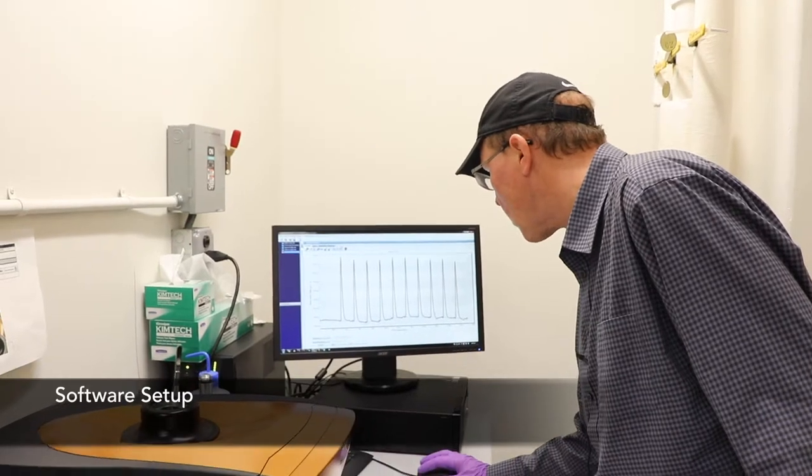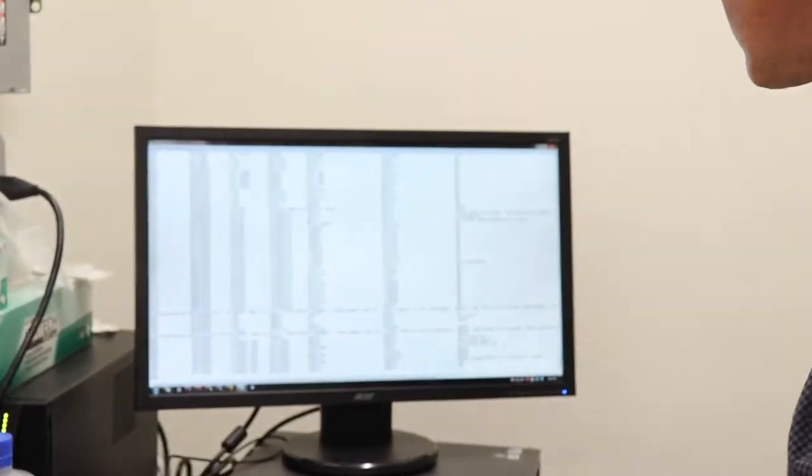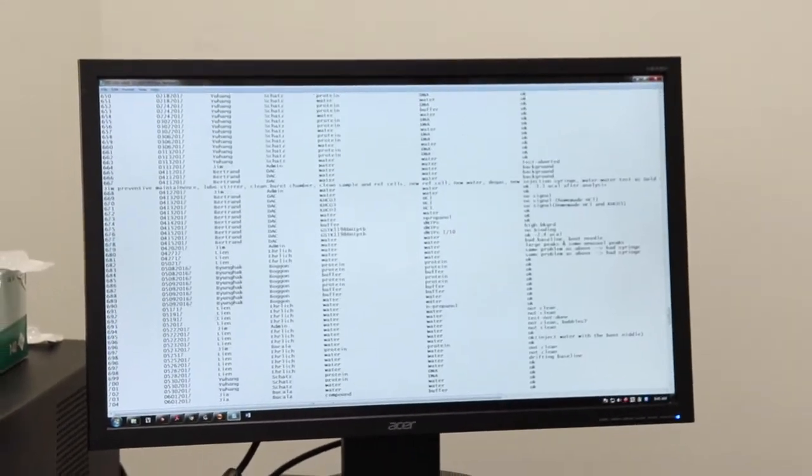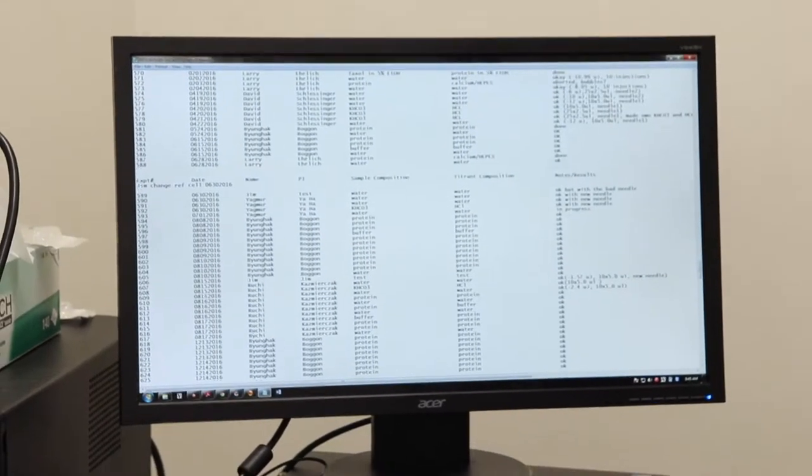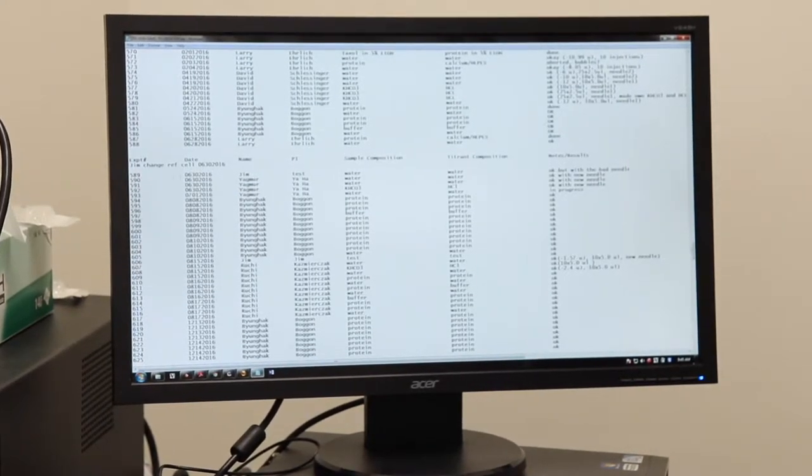One important thing is a notepad document here, where for every injection that we do, you want to do experiment number, just add another number to that. Please use the tab key in between each one of these because I import this into Excel. The date, your name, your PI, your sample and titrate composition. For the most part, protein or peptide is pretty good. The only time you want to be more specific is if you have a really volatile compound such as DMSO or something exotic that you put in there. And then at the end, you'll put notes. Mostly I'm concerned about your notes if it didn't work or your final one where you cleaned it and did water to water and then you show it's okay. For your own experiments, you can write whatever you want here.